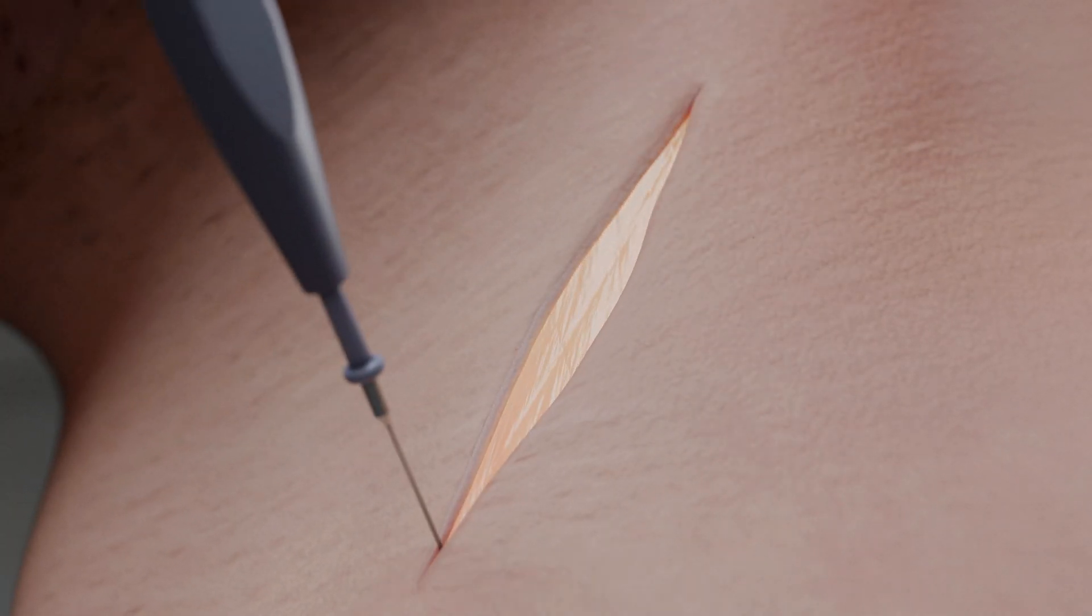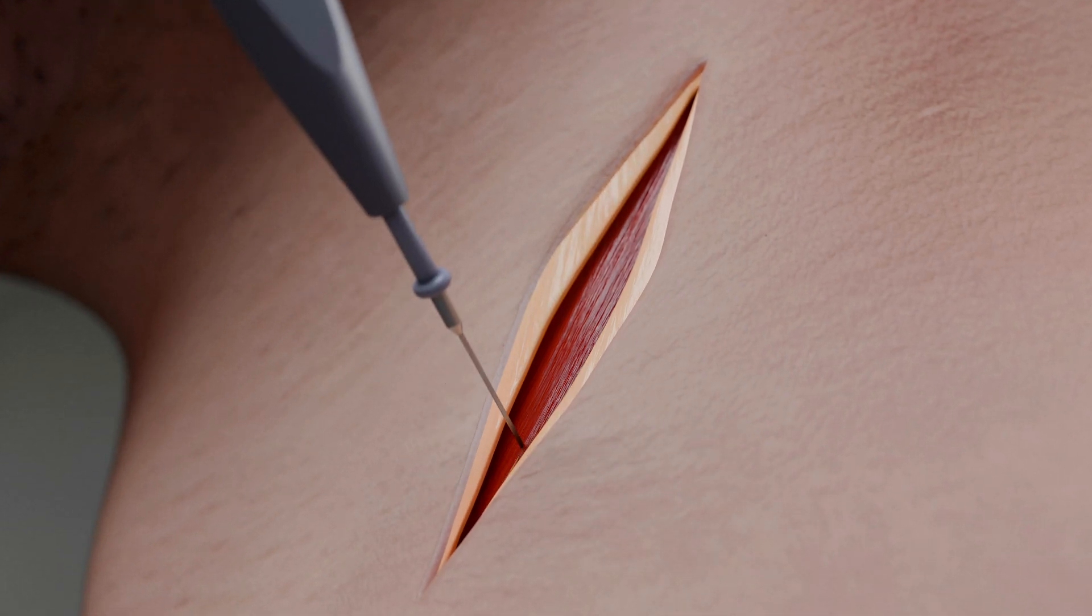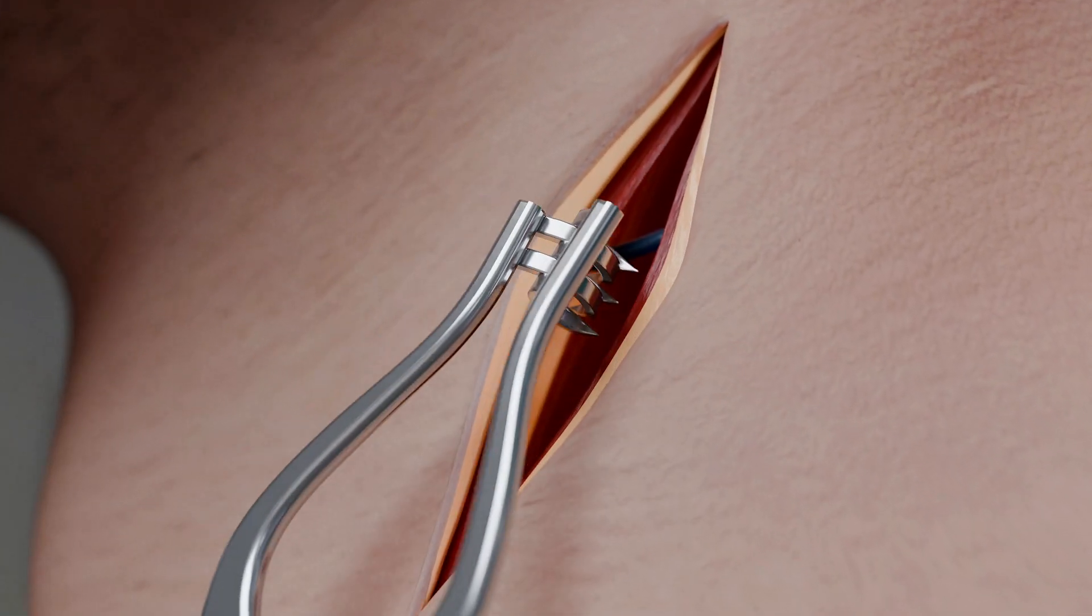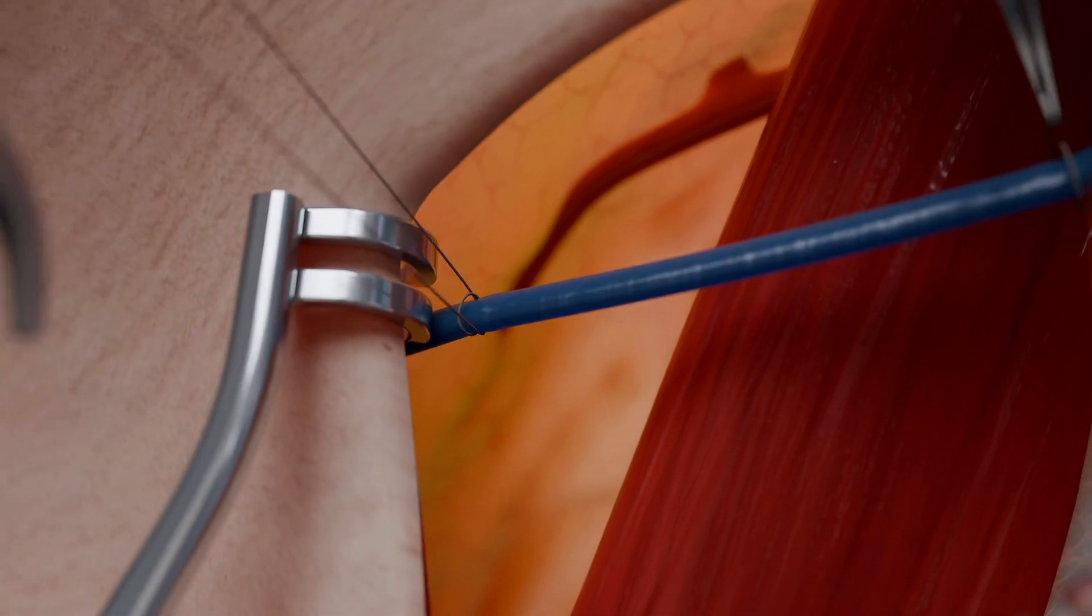The surgeon starts with a small cut along the front edge of the sternocleidomastoid muscle. Step by step, they carefully separate the tissues to minimize the risk of damaging muscles, nerves, or blood vessels.